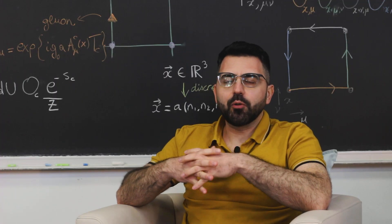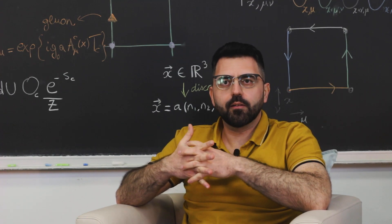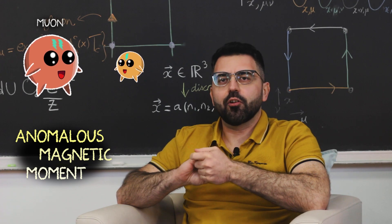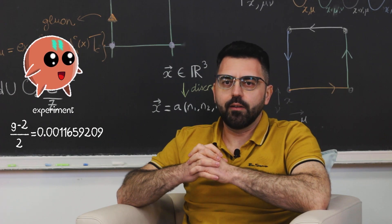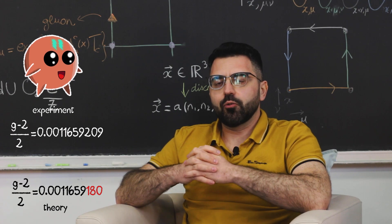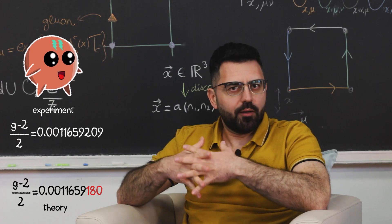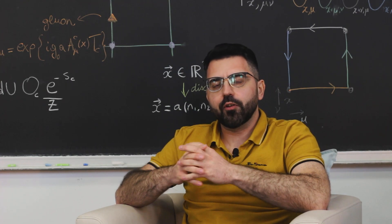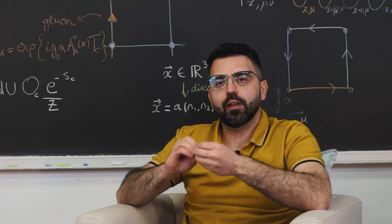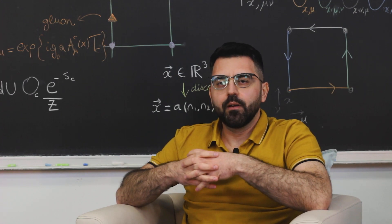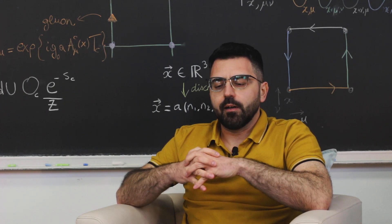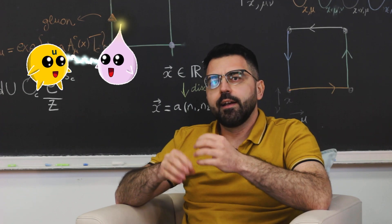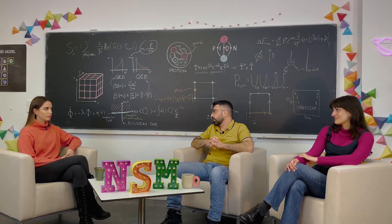We were talking before about tensions between experiments and theory. One example that comes to mind is the so-called anomalous magnetic moment of the muon. The muon is a heavier brother of the electron, and there is this particular property that we measure experimentally very, very precisely, which is somehow in tension with theoretical prediction. Lattice QCD is really playing a very important role in trying to resolve this tension. Another important direction is when we want to push the precision of our predictions to such a high level that we need to take into account even the tiniest effects — for instance, the electromagnetic effects on hadronic physics, which is something I'm working on at the moment.